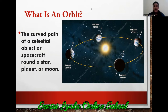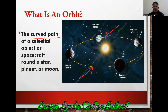Can you see it in yellow colour? Can you see this yellow colour path? It is a road, and also it is a curved path. It is an orbit.